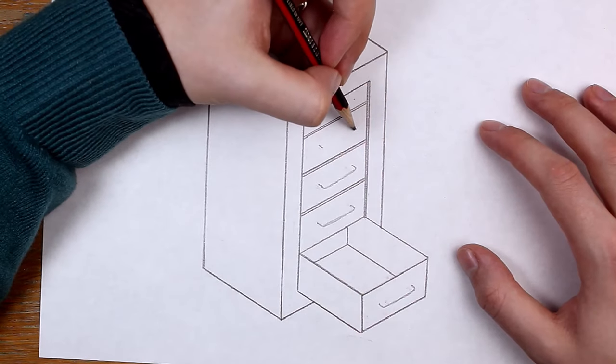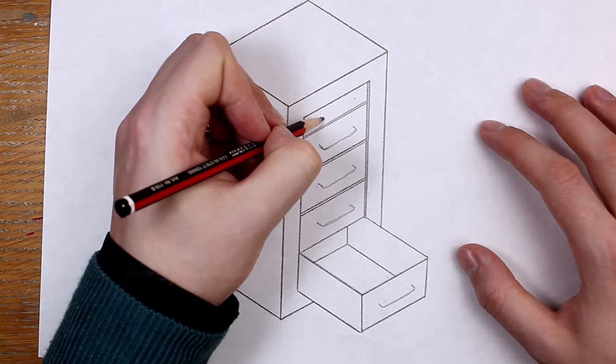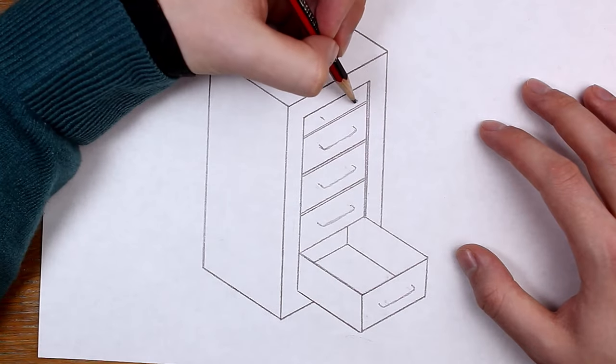Isometric drawing is a quick and easy way to draw accurate design drawings. In this video I'm going to introduce you to the basics of isometric drawing.